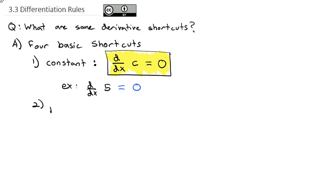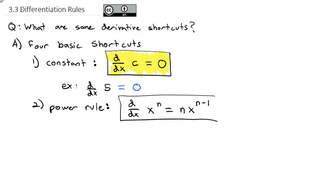The second basic shortcut is the power rule, and this is probably the one we will use the most. The idea is if we're taking the derivative of x raised to some exponent, we pull that exponent out in front, and then we reduce the exponent by one. This is probably the most used derivative shortcut. With polynomials, we pull the exponent out in front and then decrease the exponent by one. For example, the derivative of x to the seventh power: we move that seventh power out front, reduce the exponent by one, and get 7x to the sixth.